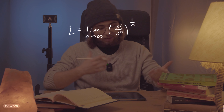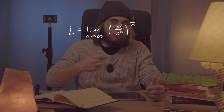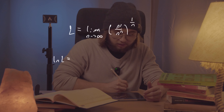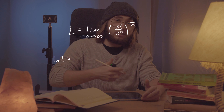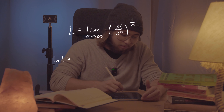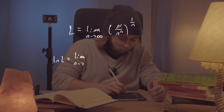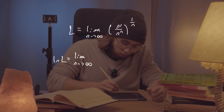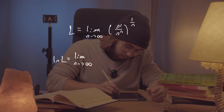Those of you familiar with limit tricks might have already guessed: I want to take the natural log of both sides. The natural log of a limit is just the limit of the natural log — that's a beautiful property. So ln(L) equals the limit as n approaches infinity of the natural log of n factorial over n to the n.